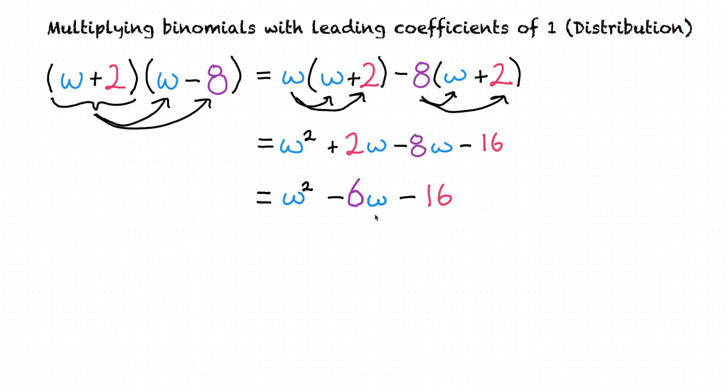How come I can't combine w squared and minus six w? They both have w in them. We can't combine w squared and minus six w, even though they both have w's, because the w's in this term and this w are raised to different exponents. So they're not considered like terms. So this expression is as simplified as it can get.